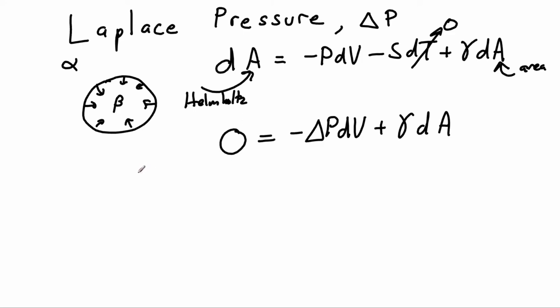So let's solve this for delta P. We can see that it's going to be gamma dA divided by dV. So we have to figure out what dA and dV are. Well remember, this is a spherical droplet, so let's annotate that this is a sphere.